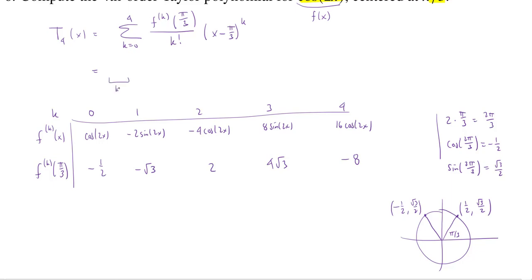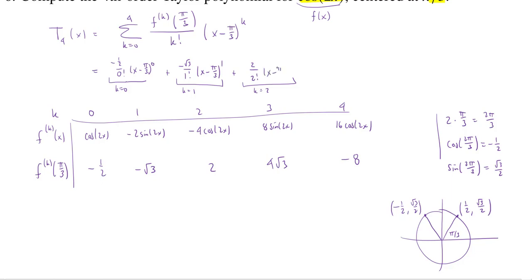Writing out each term: when k=0, we get negative 1/2 over 0 factorial times (x minus pi over 3) to the 0. When k=1, negative root 3 over 1 factorial times (x minus pi over 3). When k=2, 2 over 2 factorial times (x minus pi over 3) squared. When k=3, 4 root 3 over 3 factorial times (x minus pi over 3) cubed. When k=4, negative 8 over 4 factorial times (x minus pi over 3) to the fourth.